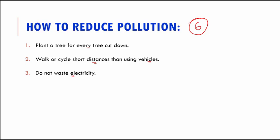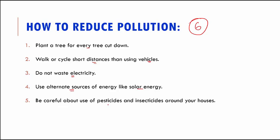Fourth, try to use alternate sources of energy like solar energy. For example, install a solar water heater on your terrace — instead of using electricity, we use energy from the sun, preventing environmental pollution. Fifth, be careful about the use of pesticides and insecticides around your house — use only what is required. Sixth, manage your household wastes better. By managing wastes and following the four golden R's, we will be protecting our environment.